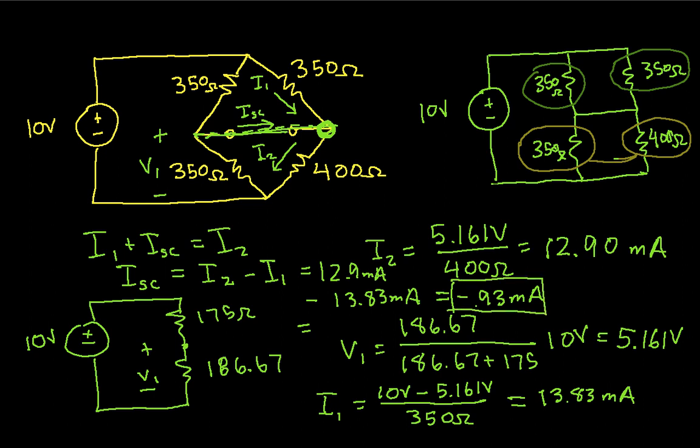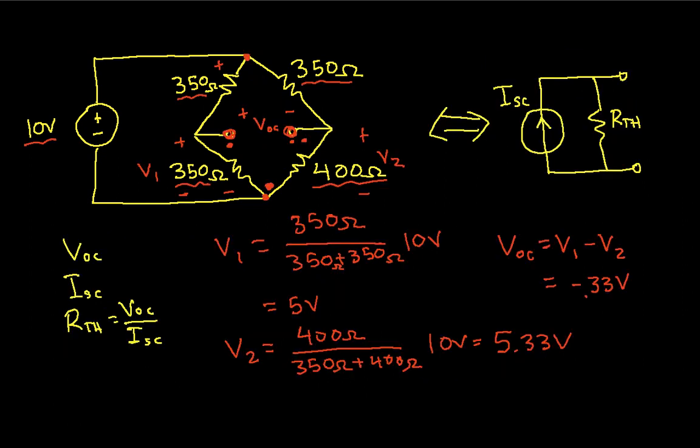Now all we need to do is go back to our original page. We have the open-circuit voltage. The short-circuit current was minus 0.93 milliamps. The open-circuit voltage was minus 0.33 volts. So, R-thevenin is minus 0.33 volts divided by minus 0.93 milliamps, which is equal to 354.8 ohms.